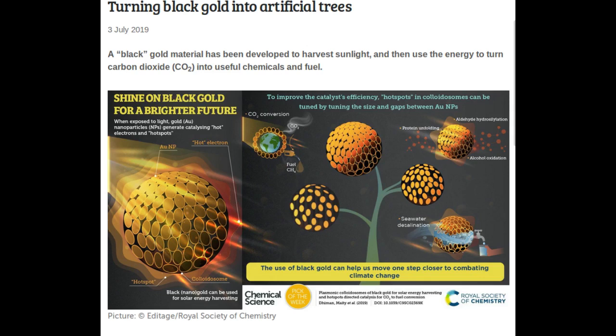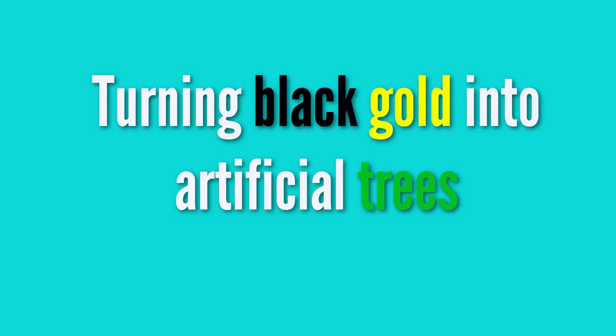Scientists from India's TIFR, or Tata Institute of Fundamental Research, decided to use nanotechnology for fighting climate change. They used nanotechnology to transform golden gold to black gold by changing the size and gaps between the gold nanoparticles. Their new material is called black gold.